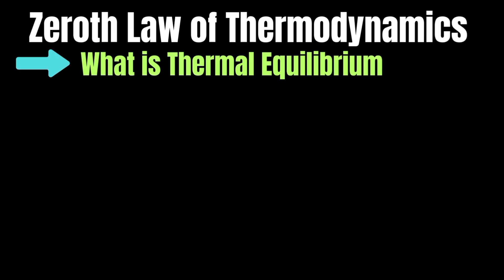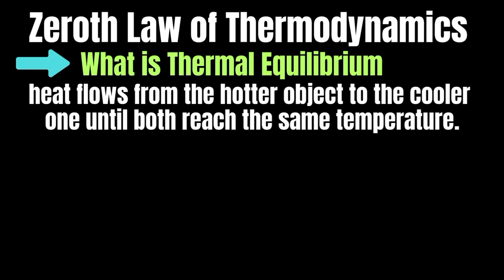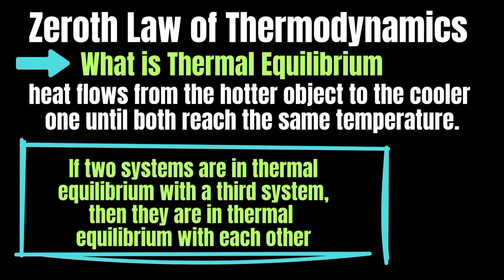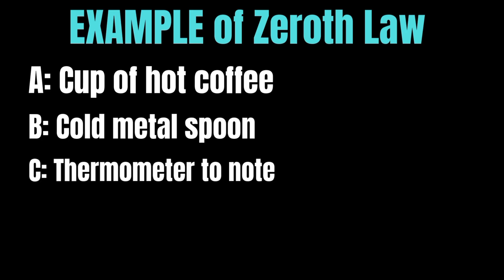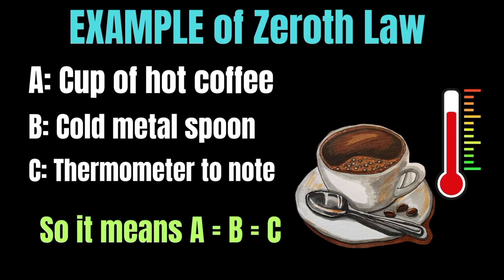The zeroth law of thermodynamics establishes the concept of thermal equilibrium. Thermal equilibrium means when two objects are in contact, heat flows from the hotter object to the cooler one until both reach the same temperature. Once they have the same temperature, no heat flows between them. The zeroth law states that if two systems are in thermal equilibrium with a third system, then they are in thermal equilibrium with each other. For example, if a thermometer measures the temperature of hot coffee (A) and a cold metal spoon (B) and both show the same reading, then according to the zeroth law, the coffee and spoon must also be in thermal equilibrium.